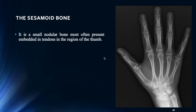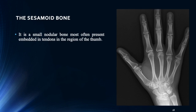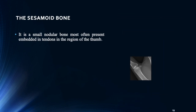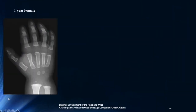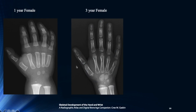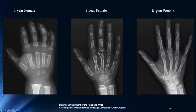Coming to the last part of the hand wrist anatomy, we need to know about the sesamoid bone. It appears as a small nodular bone in the region of the thumb, and its appearance has great clinical significance in orthodontics. When the child is around one year of age, the epiphysis just starts appearing and we can see some carpal bones. Around three years of age, more carpal bones are visible. We can clearly appreciate the epiphysis as development progresses, and when the individual reaches around 18 years of age, there is complete fusion of the epiphysis and diaphysis, and all carpal and sesamoid bones are visible.